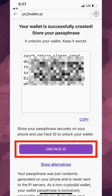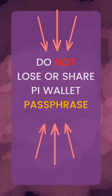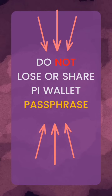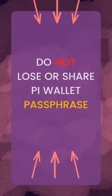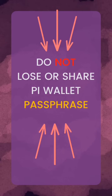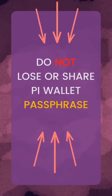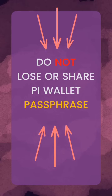For ease of use, you have the option to use biometric features such as face ID or fingerprint, depending on your phone type, to unlock your wallet. However, please do not view this as a substitute for securing your passphrase. The biometric feature will not transfer over to a new device, which can lead to your wallet loss, particularly when you lose your phone, if you do not have a record of your passphrase.